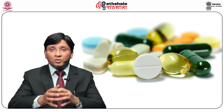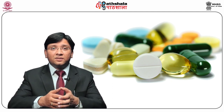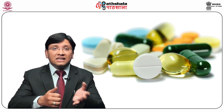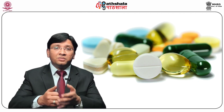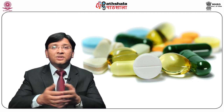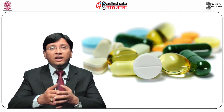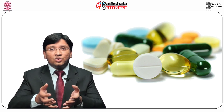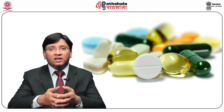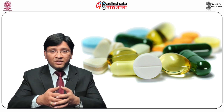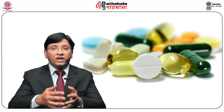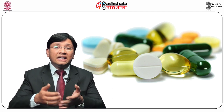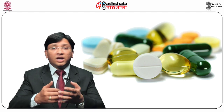An emulsion is a thermodynamically unstable system consisting of at least two immiscible liquid phases, one of which is dispersed as globules throughout the dispersion medium, stabilized by the presence of an emulsifying agent. In an oil-and-water emulsion, oil globules are dispersed in the aqueous phase; the reverse is true for water-and-oil emulsions. The diameter of dispersed phase globules is generally in the range of 0.1 to 10 microns, though some as small as 0.01 microns and as large as 100 microns are not uncommon.